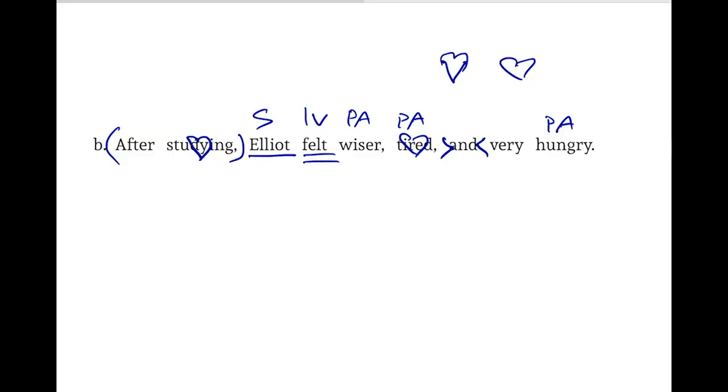'Tired' is functioning as a predicate adjective, making something known about Eliot, but it has a verbal component. Predicate adjectives are called predicate adjectives because from 'predicare,' the Latin means to make known or to publish — we're making known something about Eliot: that he felt wiser, tired, and hungry. So there we have labeled our sentence quite well.